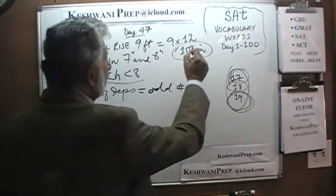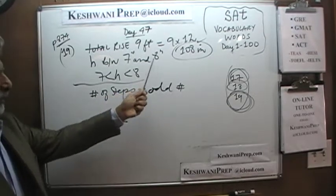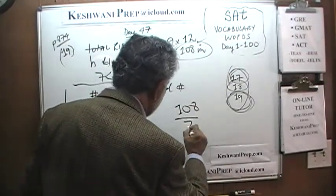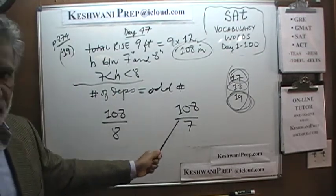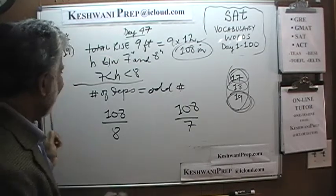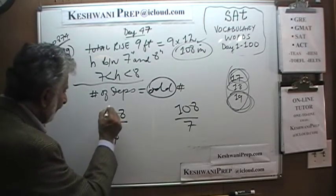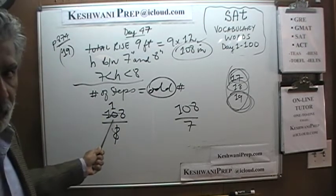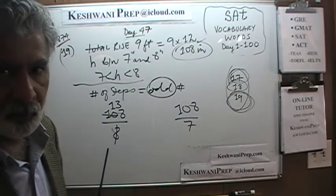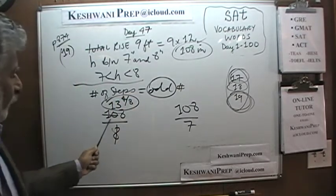We know we must go up 108 inches total. If each step is 8 inches, 108 ÷ 8 = 13.5 steps. If each step is 7 inches, 108 ÷ 7 = 15 and 3/7 steps. So the number of steps must be between 13.5 and 15 and 3/7, leaving only two whole-number choices: 14 or 15. Since it must be an odd number, we will have 15 steps.